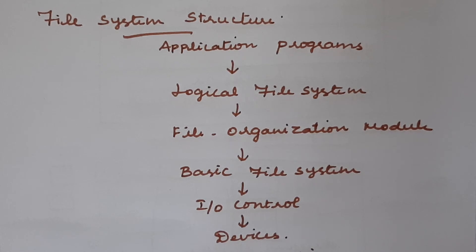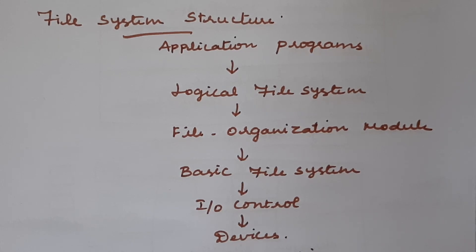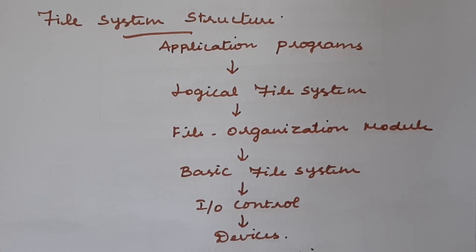The next level is the file organization module. This module knows about files and their logical blocks as well as physical blocks. It translates logical block addresses into physical block addresses for the basic file system to use. Each file holds only logical block numbers, say from 0 through N, and since the physical blocks contain the actual data, translation is needed to locate each block. The file organization module also includes free space management for the allocation and deallocation of blocks on the disk.